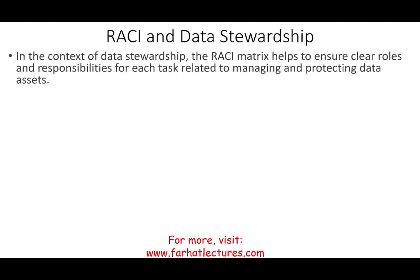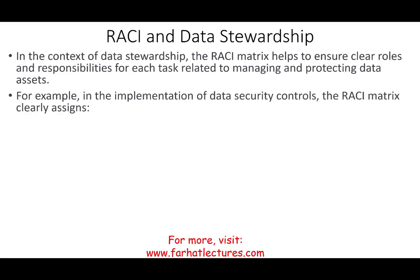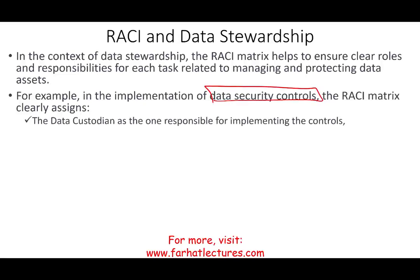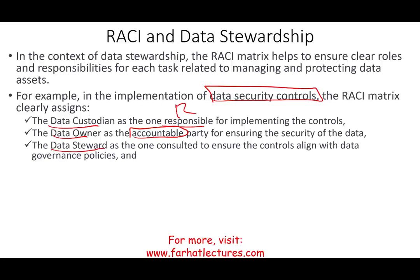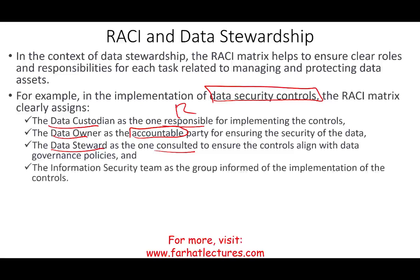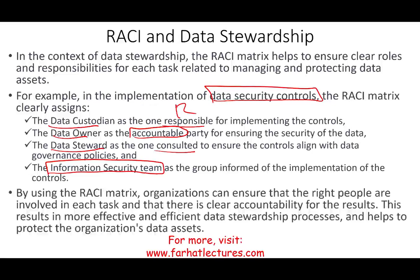In the context of data stewardship, the RACI matrix helps to ensure clear roles and responsibilities. For example, if we are implementing data security controls, the RACI model could look like this: the data custodians are Responsible for implementing the controls; the data owners are Accountable for ensuring the security of the data; the data stewards are Consulted to ensure the controls align with data governance policies; and the information security team is Informed of the implementation of the controls because they are responsible for the overall security of the system.